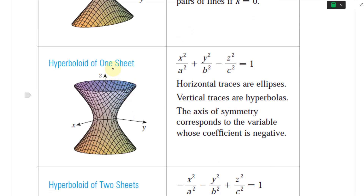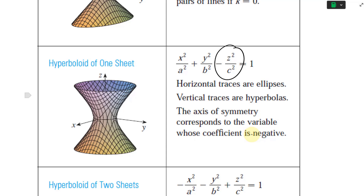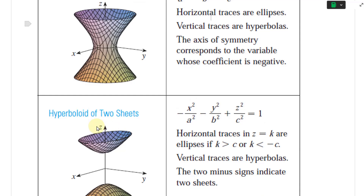The hyperboloid of one sheet has equation x²/a² + y²/b² − z²/c² = 1. Horizontal traces are ellipses, and vertical traces are hyperbolas — visible at the top and bottom. The axis of symmetry corresponds to the variable whose coefficient is negative, which here is z.